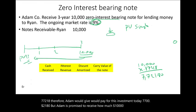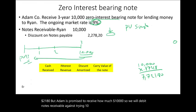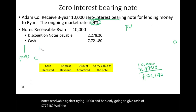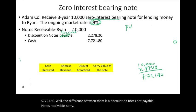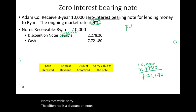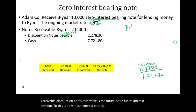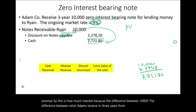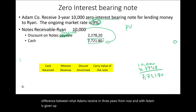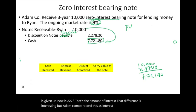Adam debits notes receivable for $10,000 but only credits cash for $7,721.80. The difference of $2,278.20 is recorded as a discount on notes receivable — a contra-asset. This discount represents the future interest revenue Adam will earn. Adam cannot record this as interest revenue today because interest is earned over time.